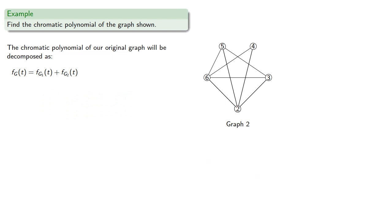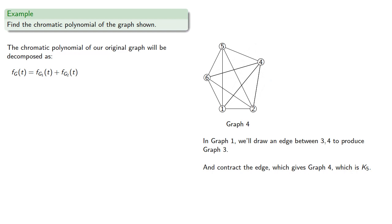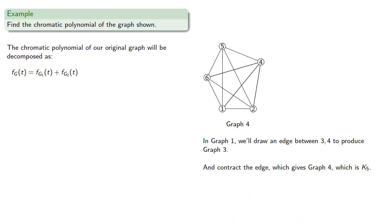Now we don't know the chromatic polynomials for either of these two graphs, so let's go further. If we start with graph 1, we can draw an edge between the non-adjacent vertices 3 and 4 to produce graph 3, and if we contract the graph we'll produce graph 4, which is actually K5. So the chromatic polynomial for graph 1 is the chromatic polynomial for graph 3 plus the chromatic polynomial of graph 4.